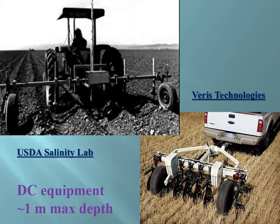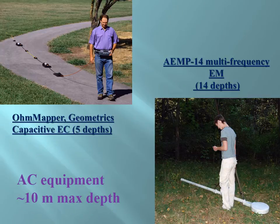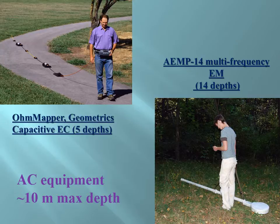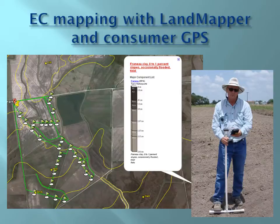There are a few different devices on the market now. The four-electrode tilling device was developed by the USDA Salinity Lab and commercialized by Veris Technologies — this is DC equipment that measures two depths simultaneously, with a maximum depth of about one meter. There are also non-contact electromagnetic devices such as the EM38 mapper using capacitive coupling, applying the same four-electrode principle. There are also multi-frequency electromagnetic devices going deeper — not by spreading the electrodes, but by using different frequencies — with a maximum depth of AC equipment of about 10 meters.